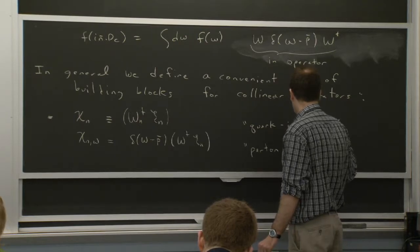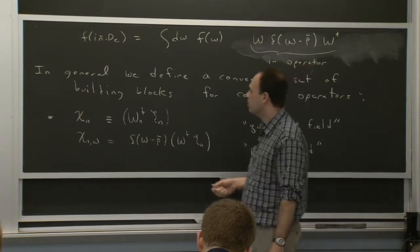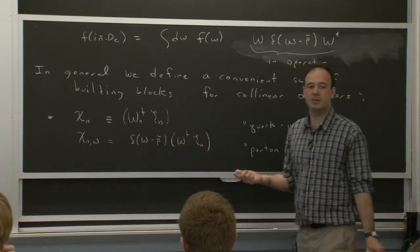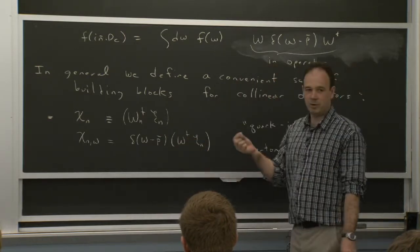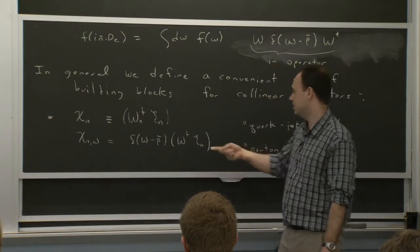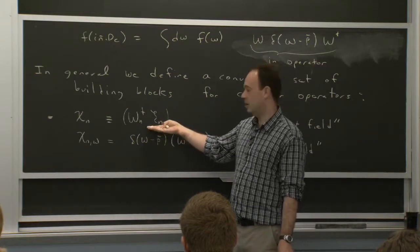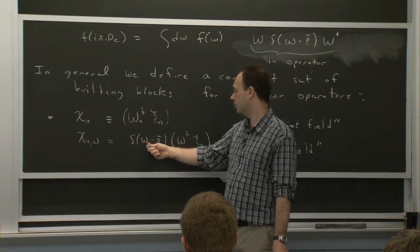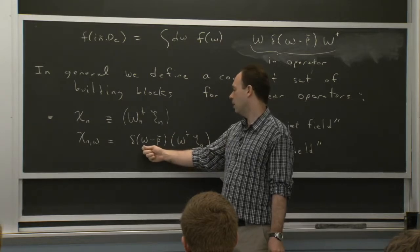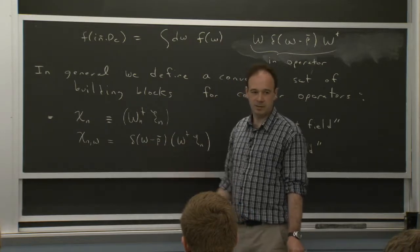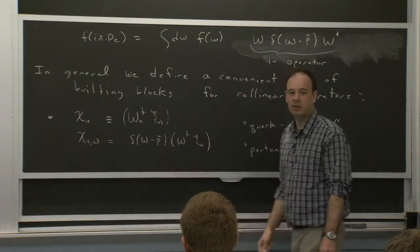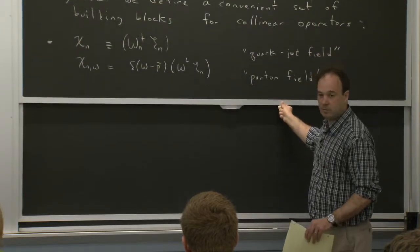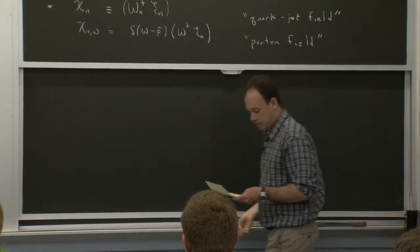This object sometimes goes by the name of the quark jet field, because if you were to produce a quark in the hard scattering process, the quark would be represented in your operator by W-dagger times chi. The Wilson coefficients would talk to that quark through the large momentum, and that quark in the low energy theory would evolve into a jet.